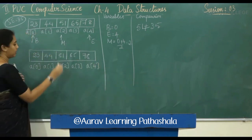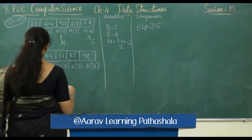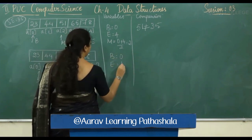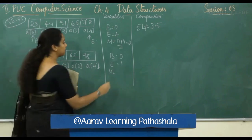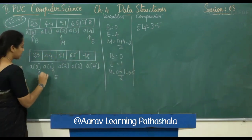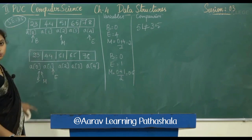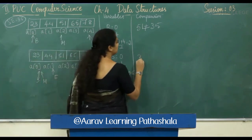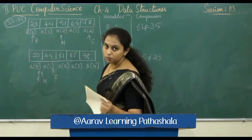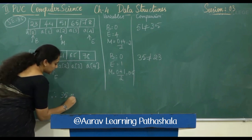Now B = 0 and end = 1. The new middle is M = (0 + 1) / 2 = 0.5, so M = 0. We compare 35 with A[0] = 23. Since 35 does not equal 23, and B is now greater than E, the element 35 is not found in the array.